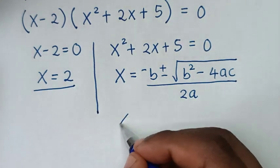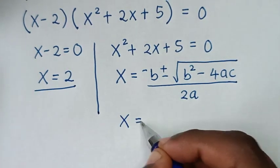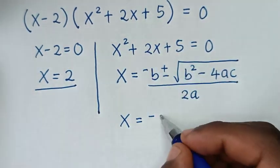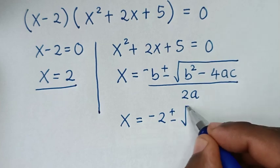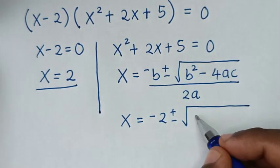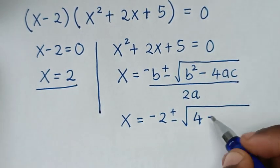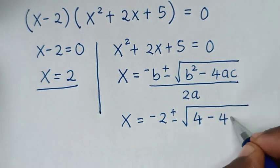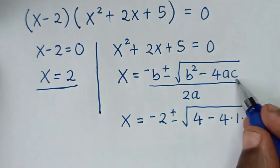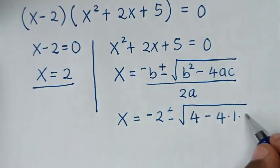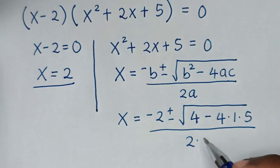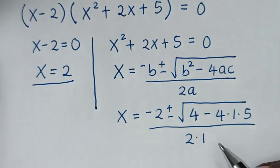So it will be x equals negative b, where b is 2, plus or minus square root of b squared which is 2 squared equal to 4, minus 4 times a where a is 1, times c where c is 5, over 2 times a which is 1.